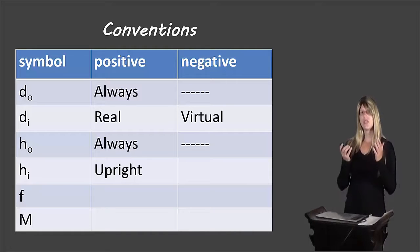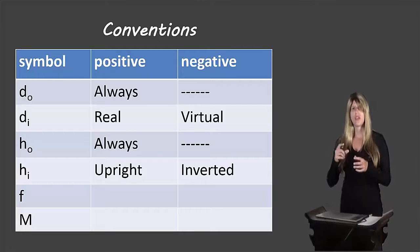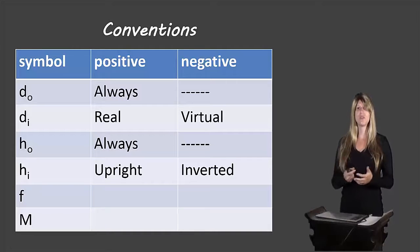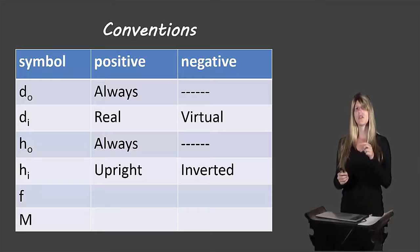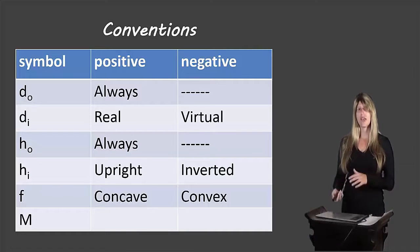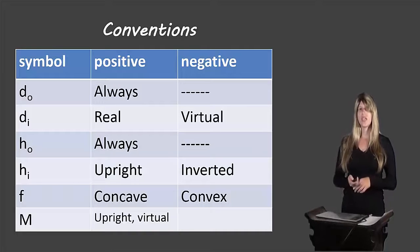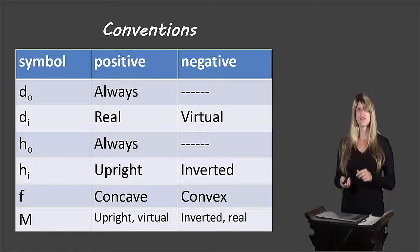HI will be positive when the image is upright and negative when it is inverted. Similar to what we saw with real versus virtual, even though we measure the height of the image with a ruler — say 5 centimeters — if it is an inverted image, on our paper we'll write negative 5 to represent that it was inverted. The focus will be positive for concave and negative for convex. Magnification is positive when it is an upright and virtual image, and negative if it's inverted or real.